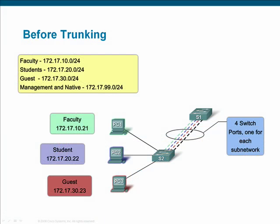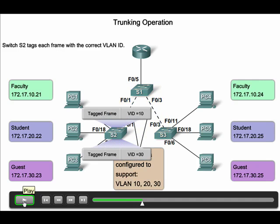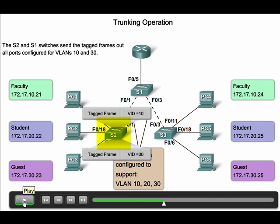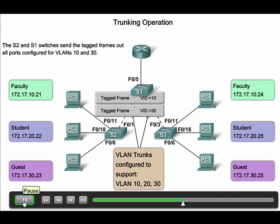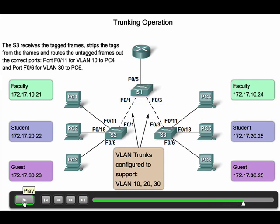VLAN switches are often connected by using a crossover cable. These switch interconnections are called trunks. Trunks carry traffic from all VLANs on a single cable. Without trunks, each VLAN on a switch would need its own cable to connect to its matching VLAN on another switch. Trunk ports solve this problem by tagging frames with specific VLAN information. The most used tagging protocol is IEEE 802.1Q. In this animation, when switch 2 receives the frames, it tags them with the VLAN information from which they originated — 10 and 30. After traversing the trunk lines and arriving at switch 3, the tags are stripped and the frames are sent out the appropriate ports to arrive at the correct end device.